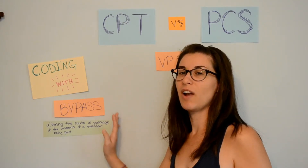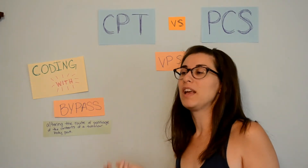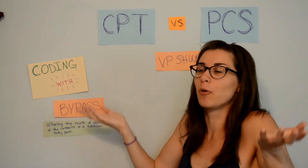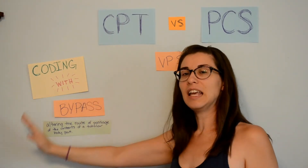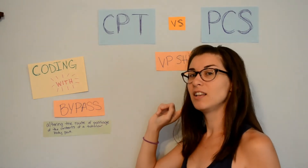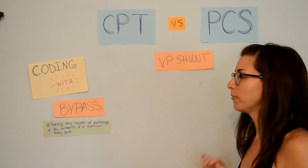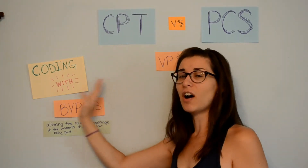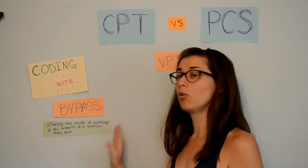Everything is within a table of the body system that we can always go to. Since each character of a PCS code describes and captures a different component of the procedure, it is in one easy place to find. We don't have to worry about being in the wrong section or the wrong list of codes or not being able to find whatever heading we're under. It's all easily in a table where we can find it. And that's why I like PCS over CPT, especially with this specific procedure. Bypass is a fun root operation to work on and to code for.